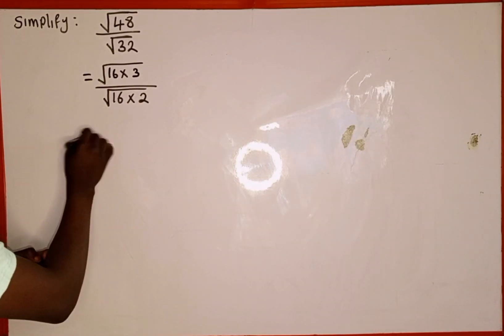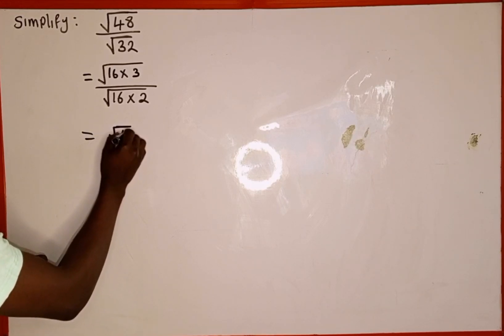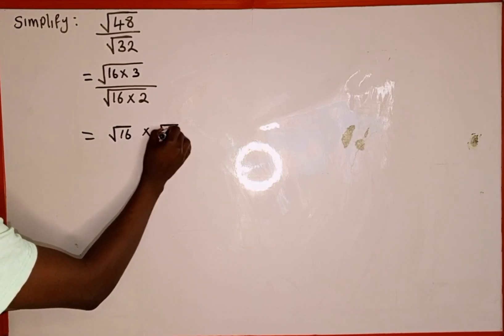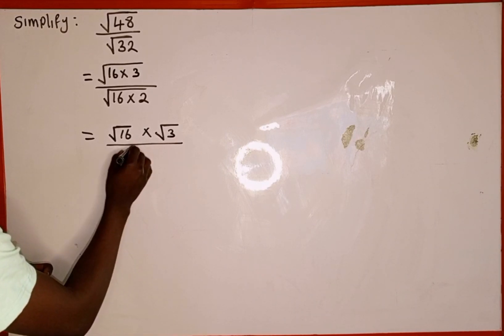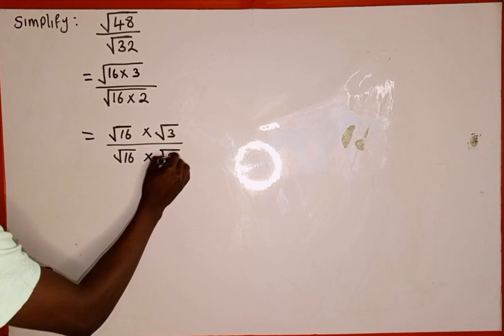So one of the properties of surds, this can also be written as what? Square root 16 multiplied by what? Square root 3. Then divided by what? Square root 16 divided by square root 2.